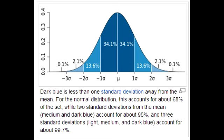The bell-shaped curve shows that results within ±1 standard deviation account for 68% of all results; within ±2 standard deviations account for 95%; and within ±3 standard deviations account for 99.7% of all results.